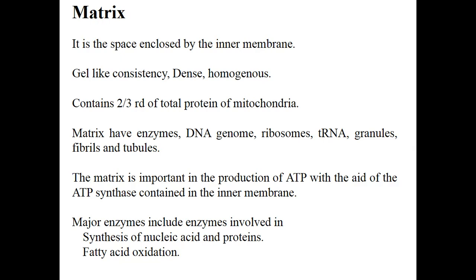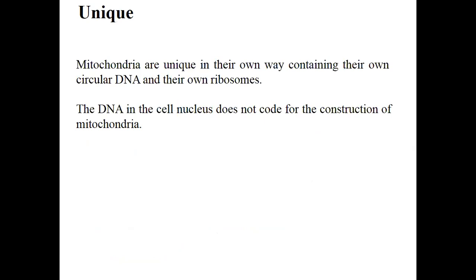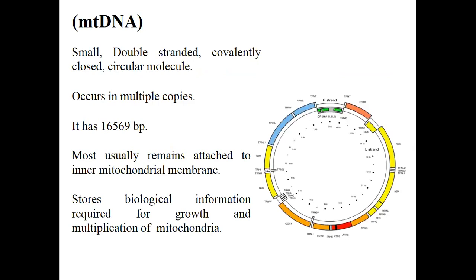The uniqueness of mitochondria lies in having its own circular DNA and its own ribosomes for protein production. However, mitochondria also use many proteins from the nucleus of the cell. The mitochondrial DNA is a small double-stranded covalently closed circular molecule occurring in multiple copies, consisting of 16,569 base pairs.